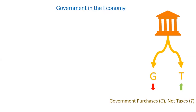We have a budget deficit when government spending is greater than taxes — meaning the government is spending more than what it's earning — and we have a budget surplus when taxes are greater than government spending.